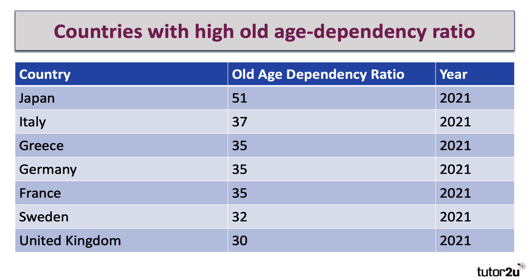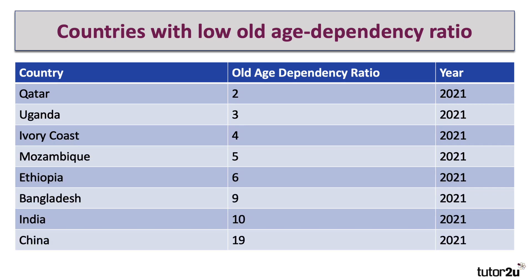All of this data is for 2021 and comes from the United Nations. Italy, Greece, Germany and France are quite high. The UK is lower, but at 30 as a ratio. In contrast, Qatar, Uganda, Ivory Coast — these are countries with an old age-dependency ratio of less than 10. India is at 10. China is at 19. In a previous video, we looked at the differences in the age composition and the population growth rates of India and China.